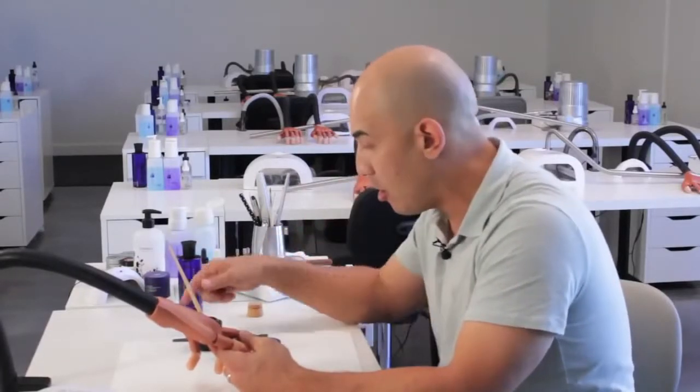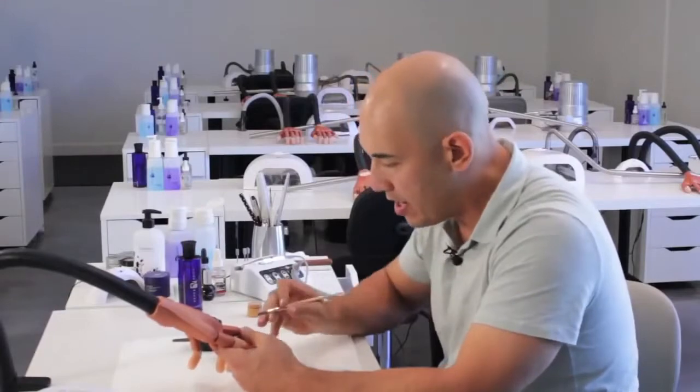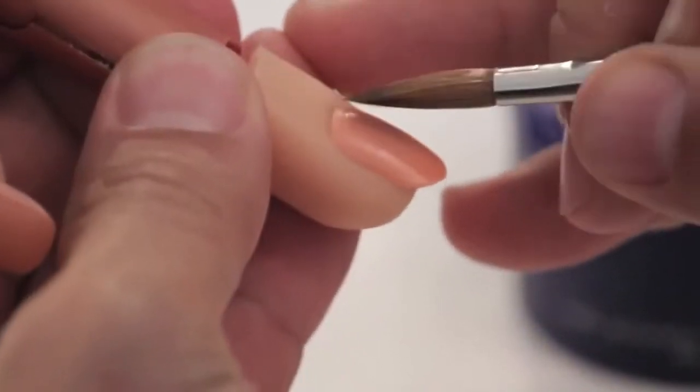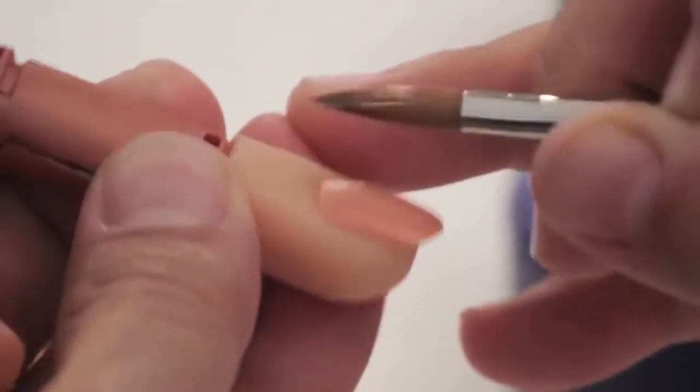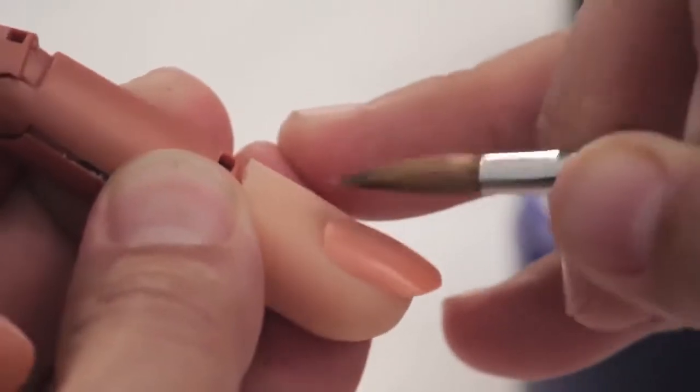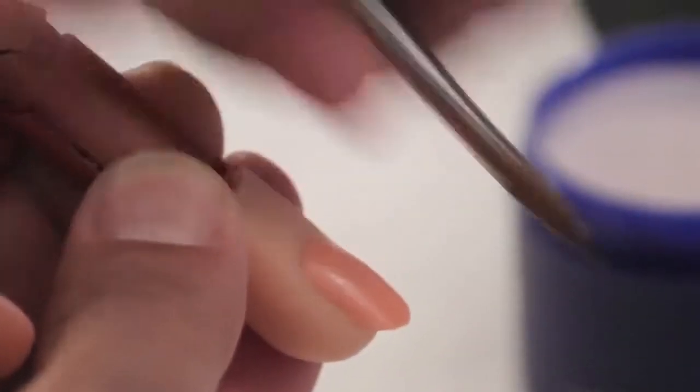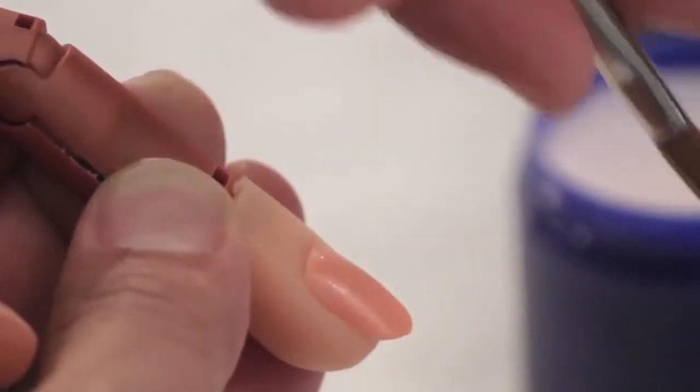When we're setting our pearl to the cuticle area, one of the things I try to focus on is keeping the pearl behind the tip of the brush, not pushing it towards the cuticle. We want to make sure the brush is behind the acrylic pearl, allowing it room to run towards the free edge.